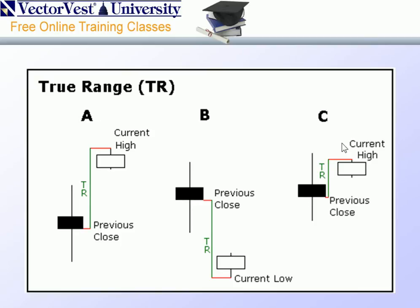In example C, we have an inside bar with no gapping action, so we take the current high minus the previous close. Our final example would be an engulfing bar or candlestick fully covering the previous day's action, and we simply take the current high minus the current low of the current bar. This results in absolute values that are positive numbers, because we're not interested in measuring the direction of the price movement — just the breadth of the price movement.